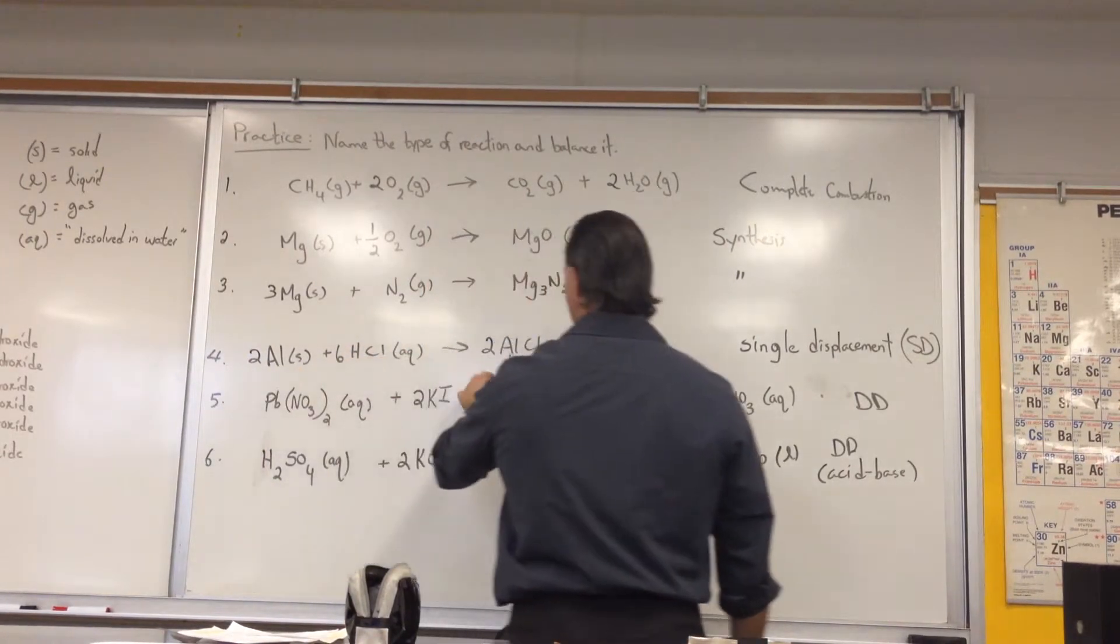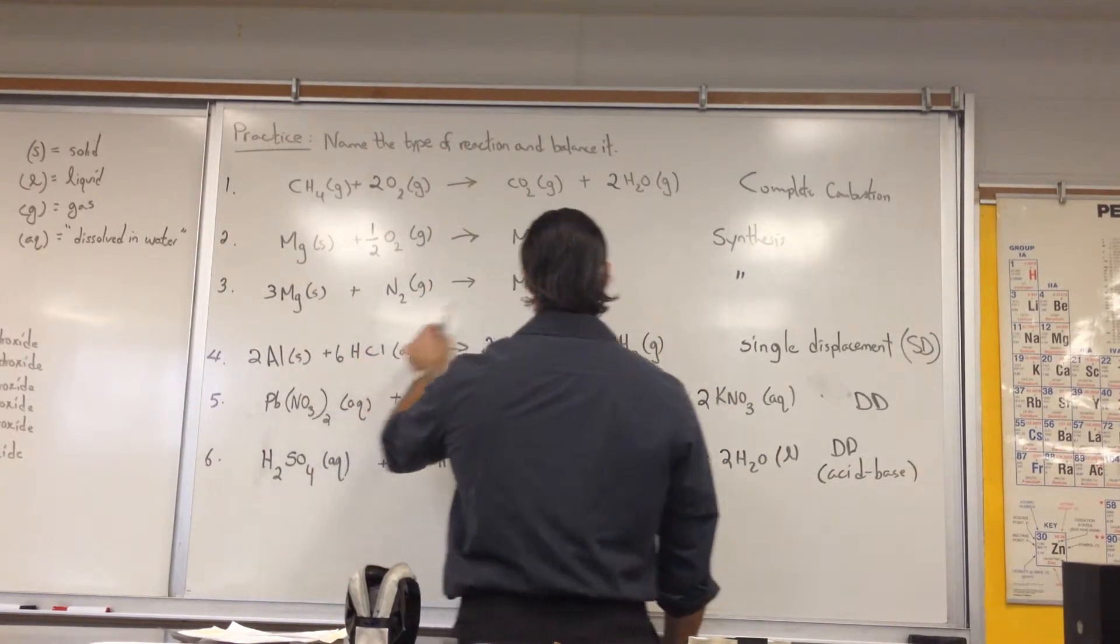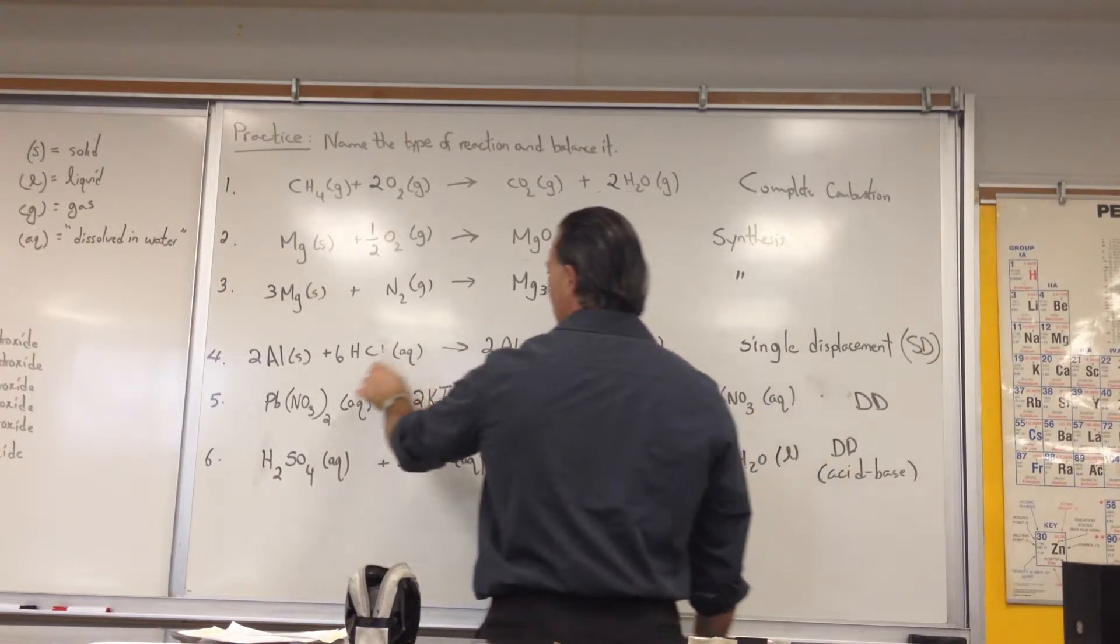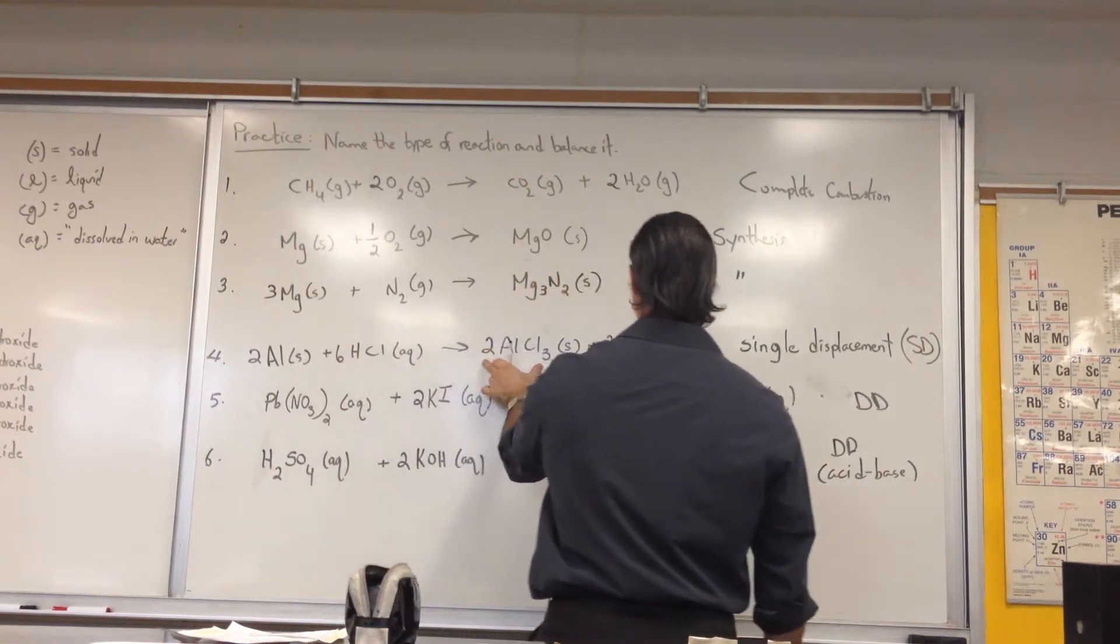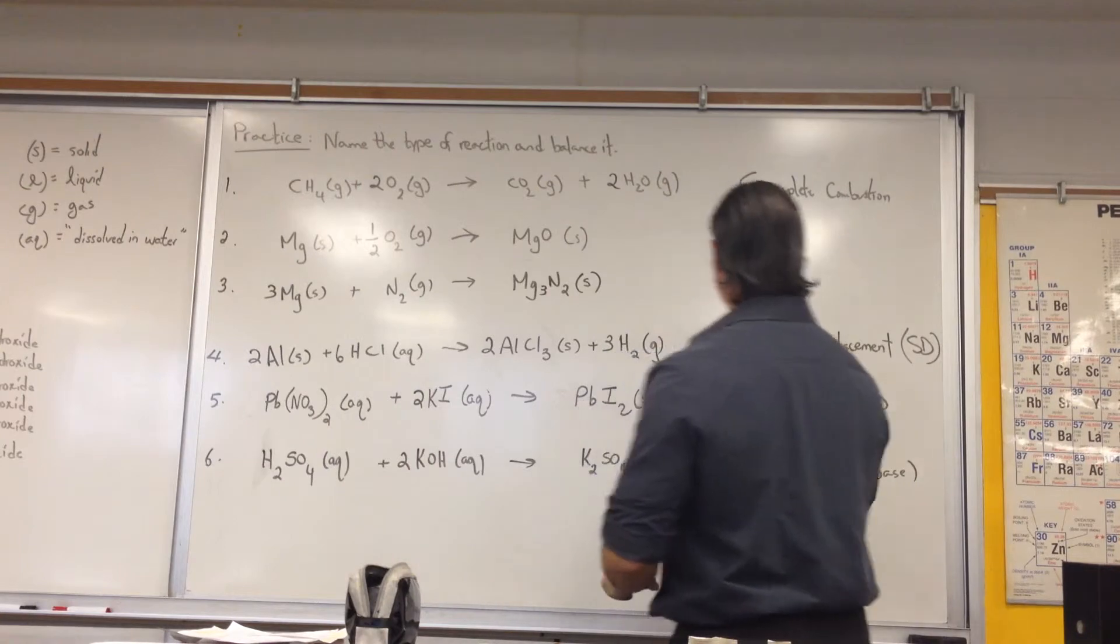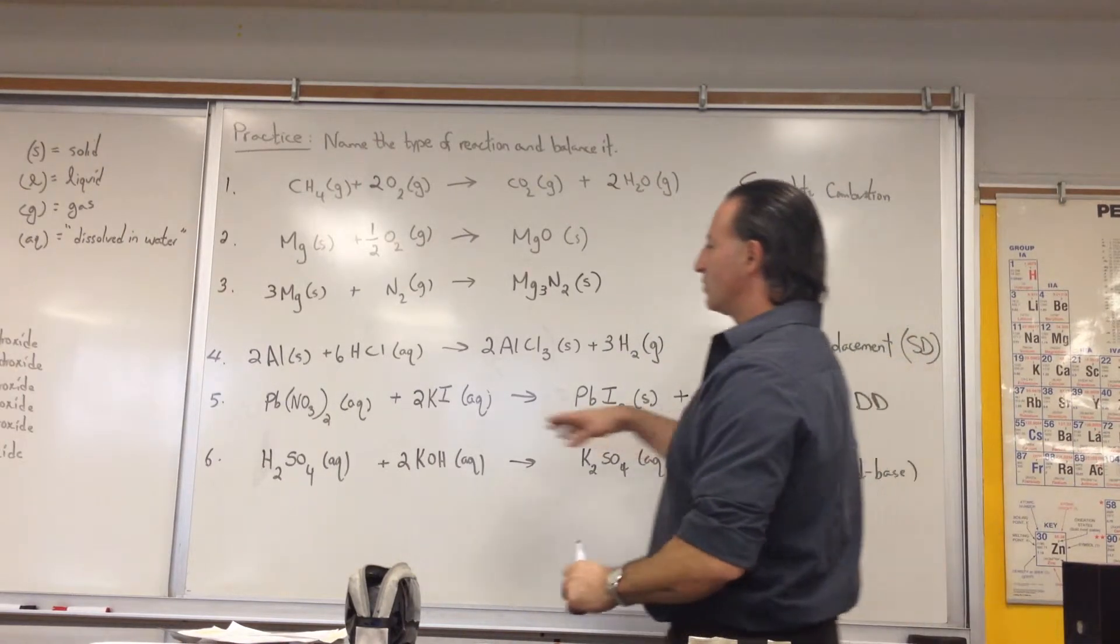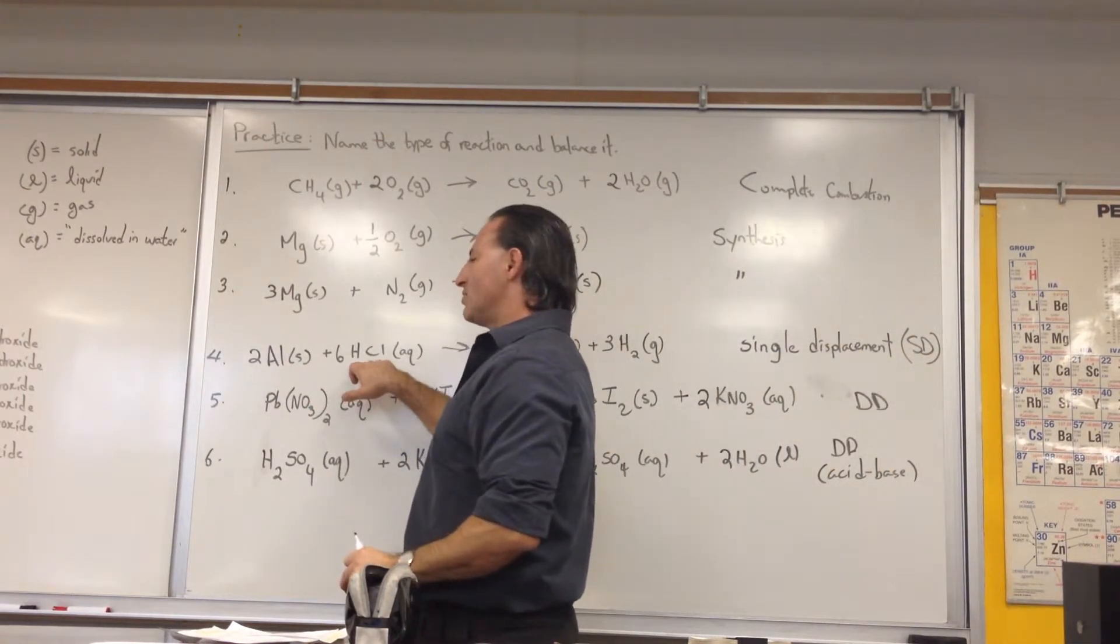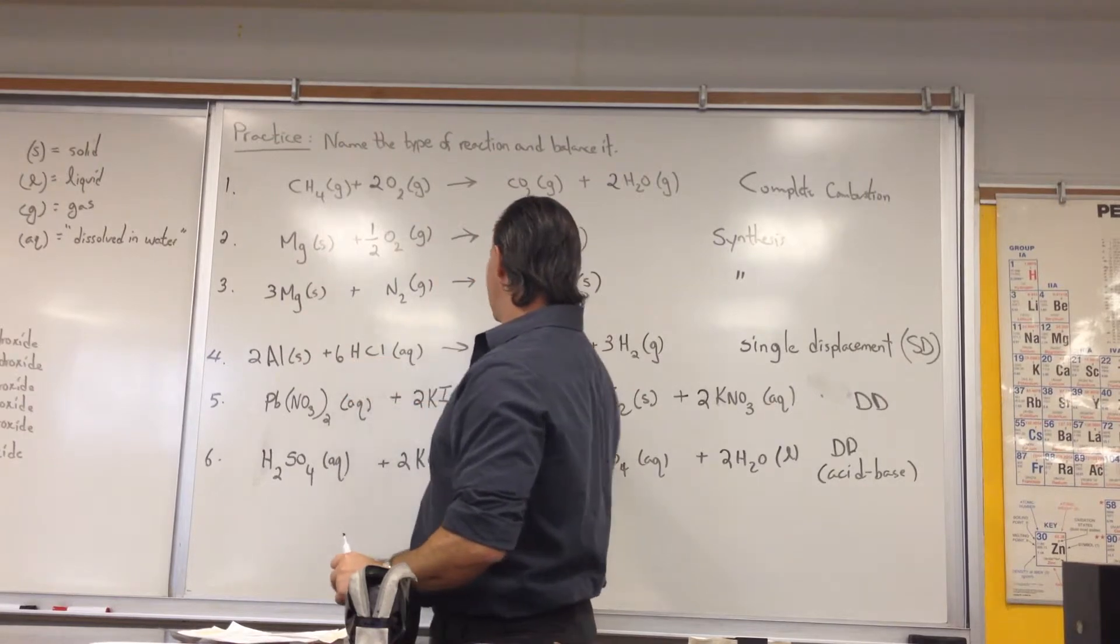Let's check now. Two aluminums, two aluminums; six hydrogens, six hydrogens; six chlorines, six chlorines. It balances, and it's a single displacement reaction. We have aluminum displacing the hydrogen in the hydrochloric acid to form aluminum chloride.